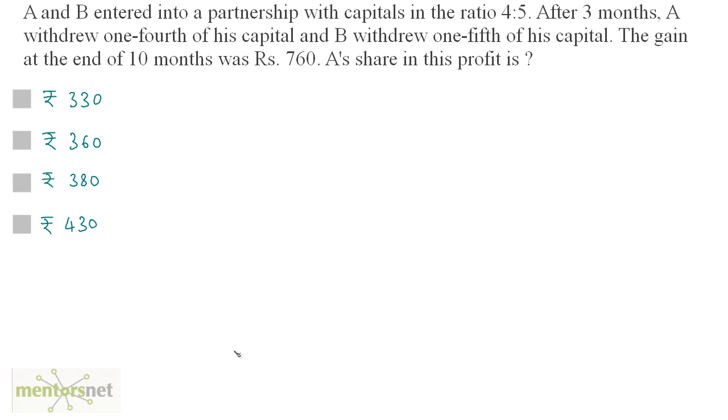A and B entered into a partnership with capitals in the ratio 4:5. After three months, A withdrew one-fourth of his capital and B withdrew one-fifth of his capital. The gain at the end of 10 months was Rs. 760. What is A's share in this profit?